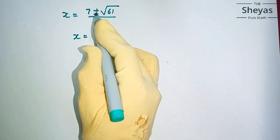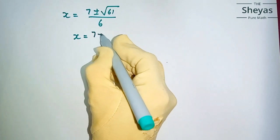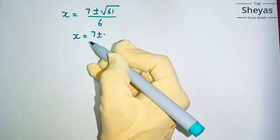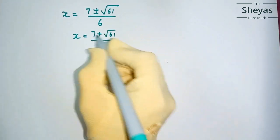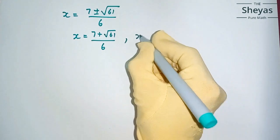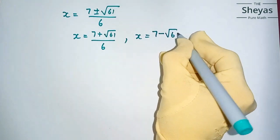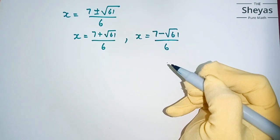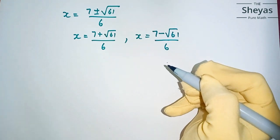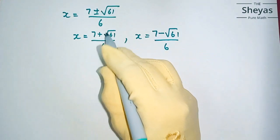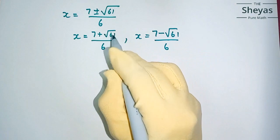Since plus or minus is here, we will get two values for x. x equals 7 plus root 61 by 6, and x equals 7 minus root 61 by 6. This is the required answer, and you can find out the value of root 61 using your calculator.